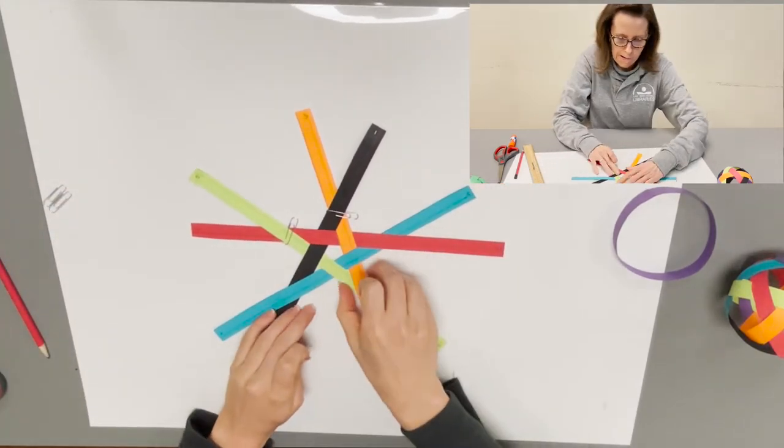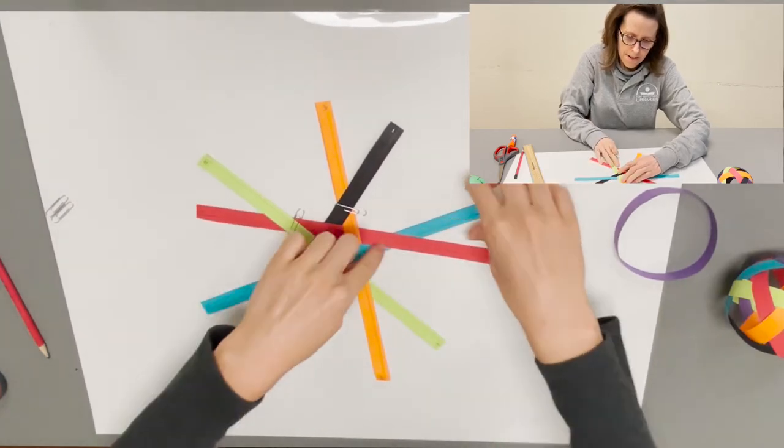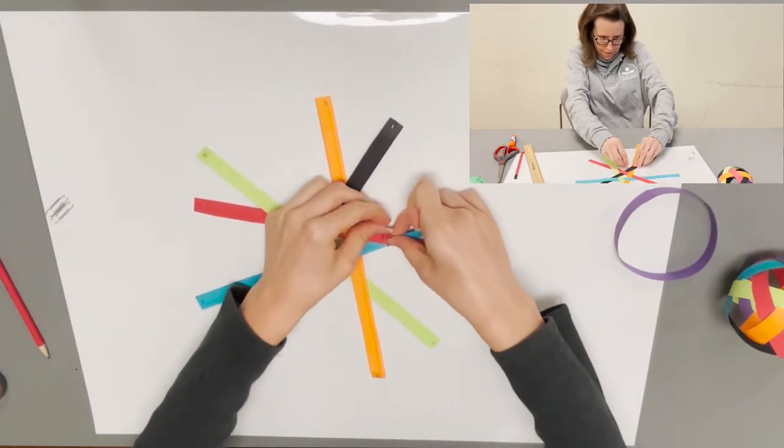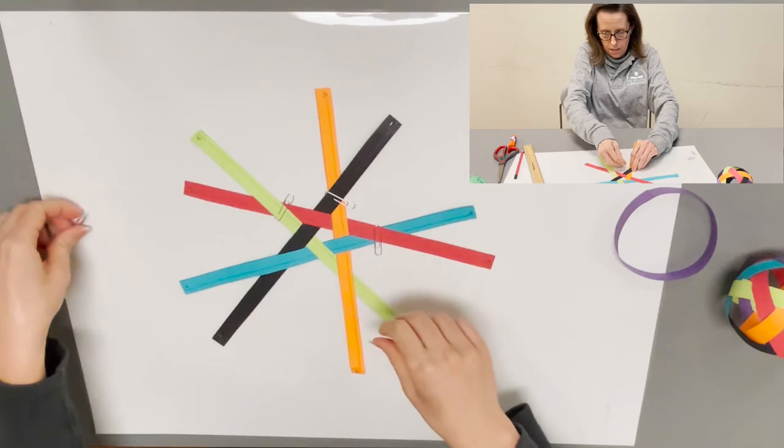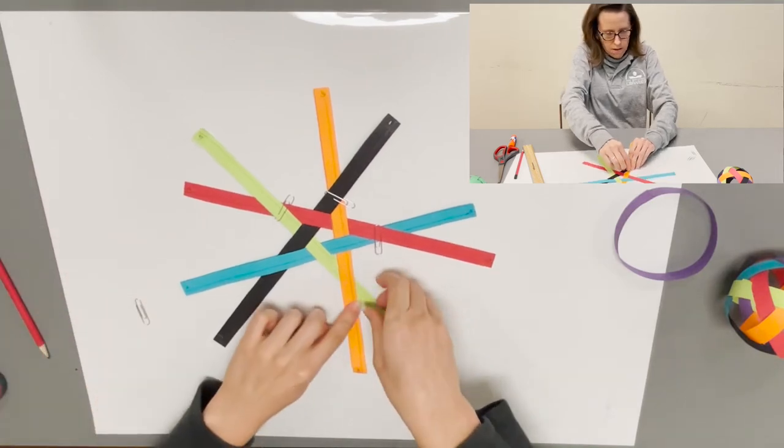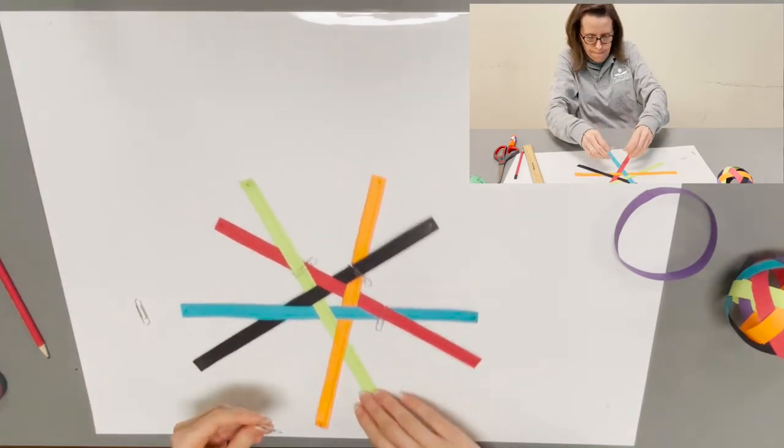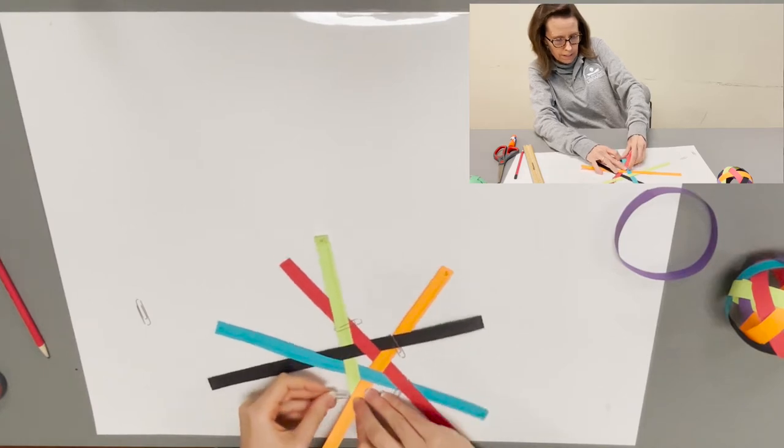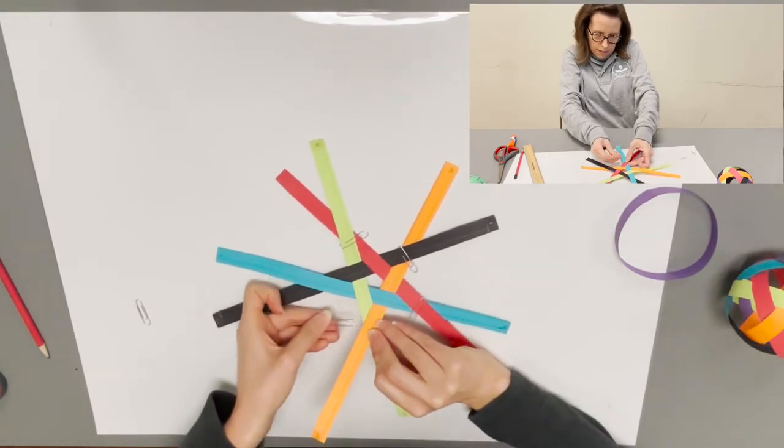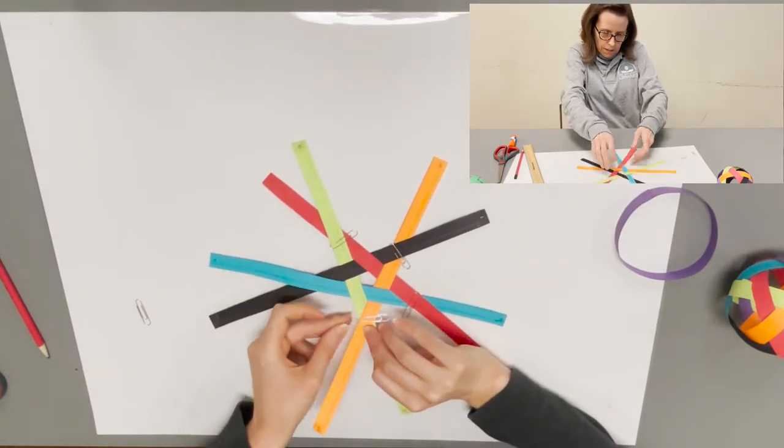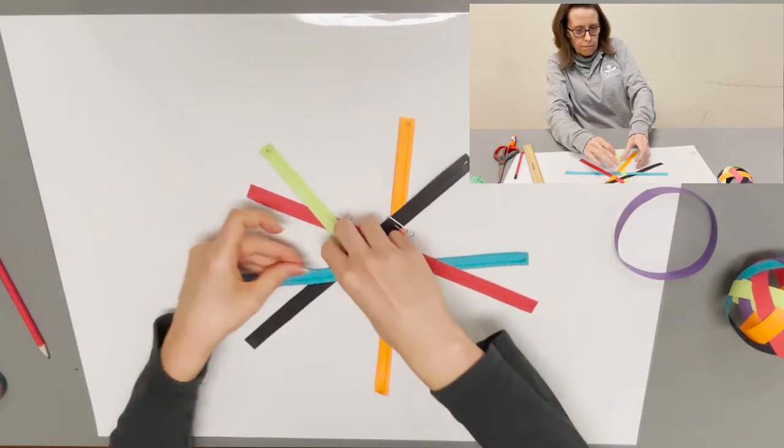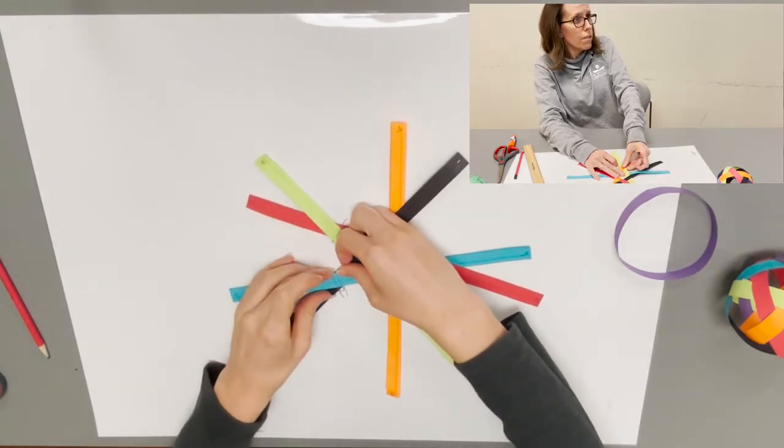The orange, red, and green will go together. Orange and black will go together. Teal and red goes together. Orange and green. And the teal and the black will go together.